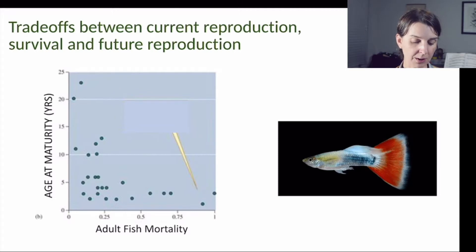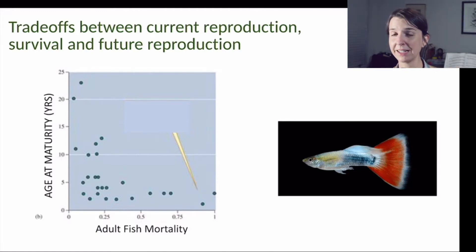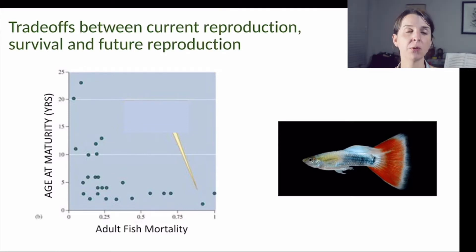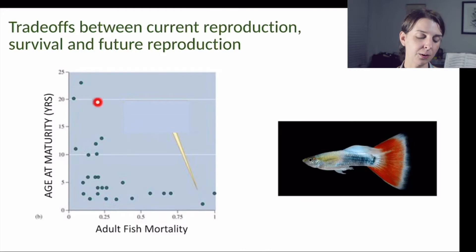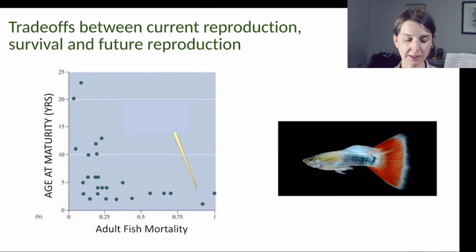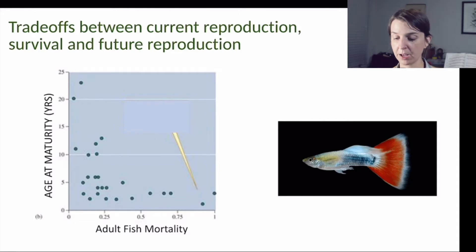If there is really high mortality — if adults are really unlikely to make it to the next age — that's when we see populations have a very young age at first maturity. But in populations and species where we see very low rates of mortality, or alternatively high rates of survival, those fish take much longer to reach maturity — a much later age of maturity. So there's a pretty strong relationship between the chance of dying and the age at which an organism becomes mature.